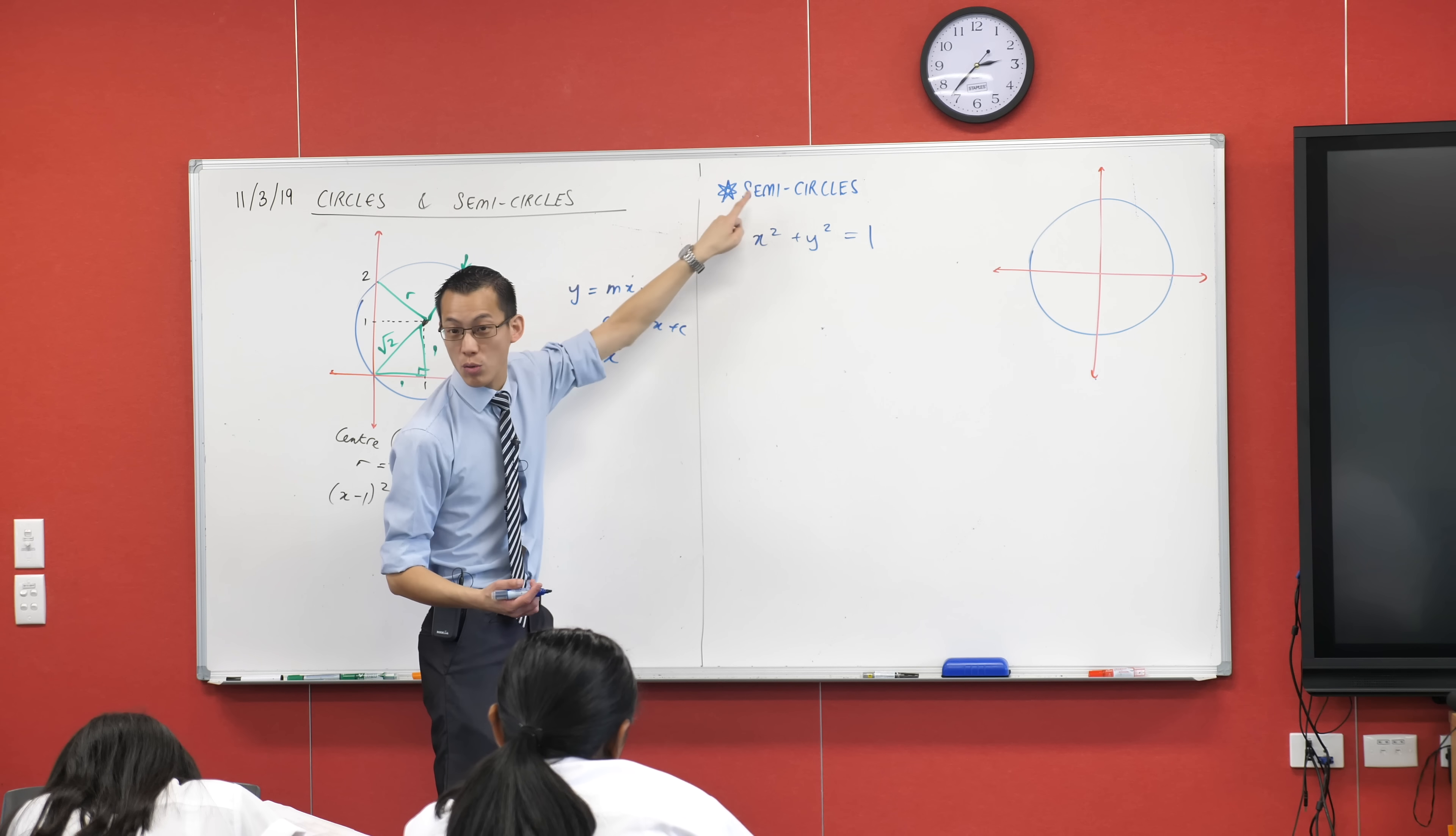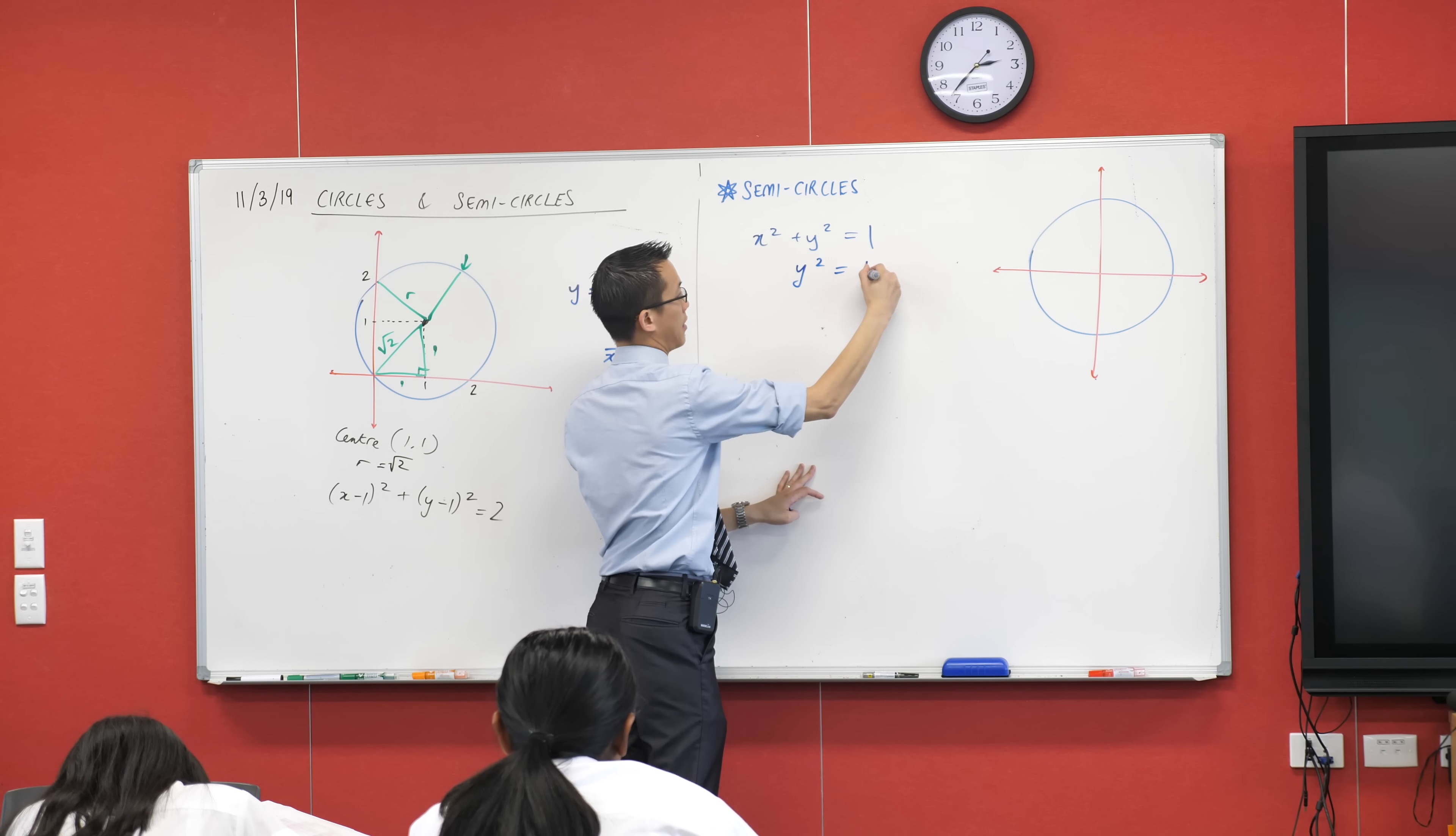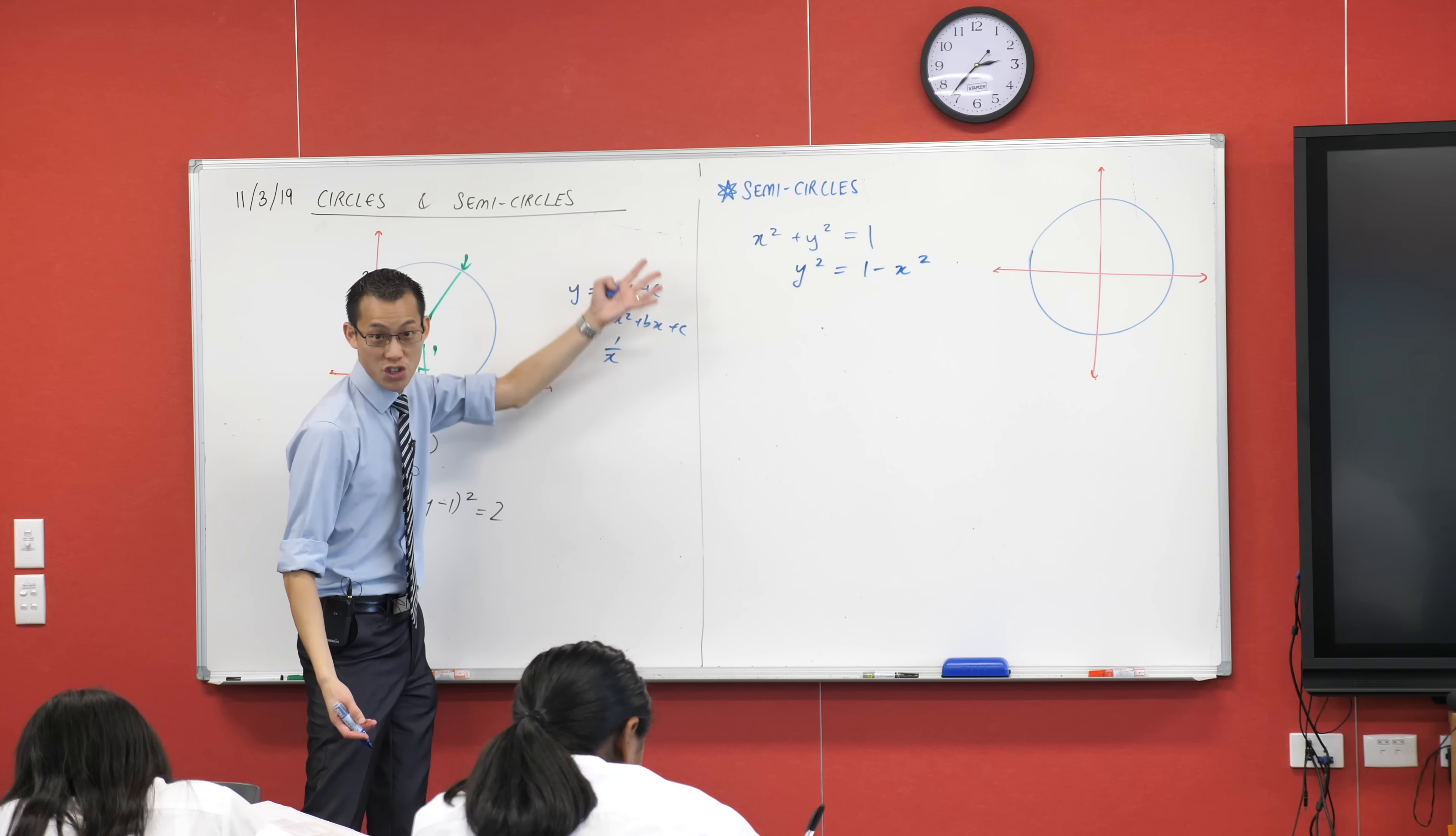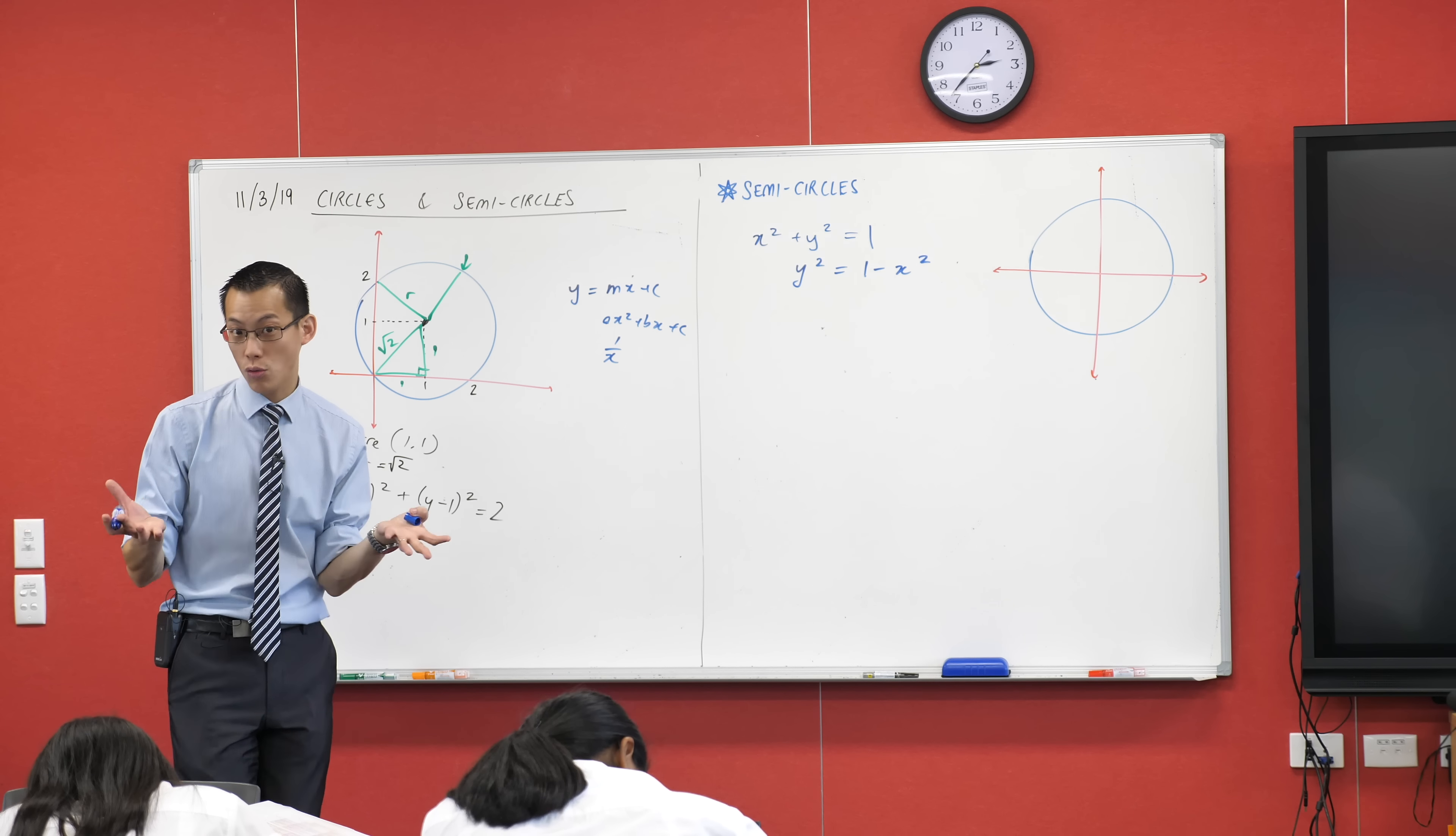We usually make y the subject. So here, what do I need to do first to make y the subject? y squared is going to 1 minus x squared. I'm going to subtract x squared from both sides. So far, so good. Now I wanted y equals some stuff, not y squared equals some stuff. So what should I do to both sides? Take the square root.